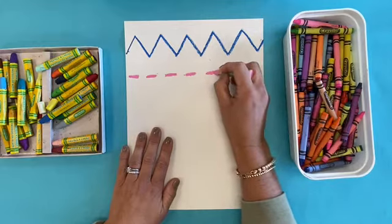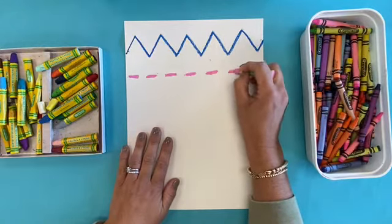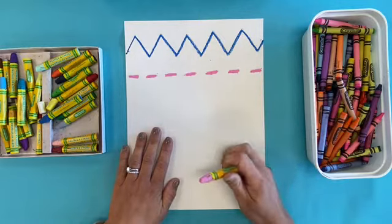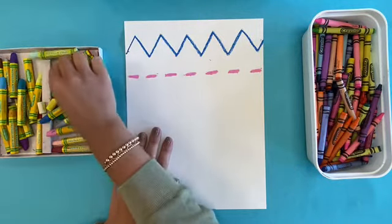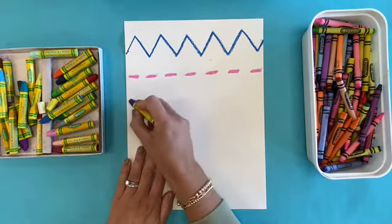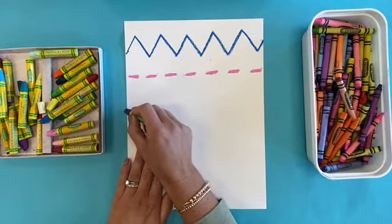Try to stay nice and straight, pressing really hard so those colors are nice and bold. Great job! Choose another color. Now we're going to make a looped line—a loop line. This is one of my favorites to make.